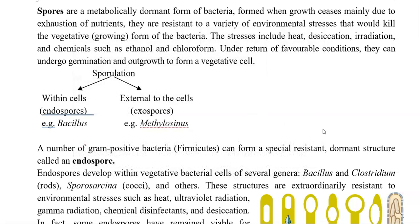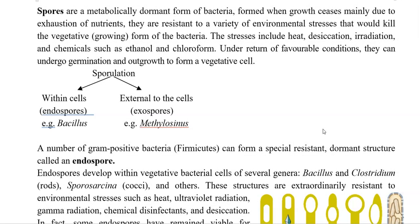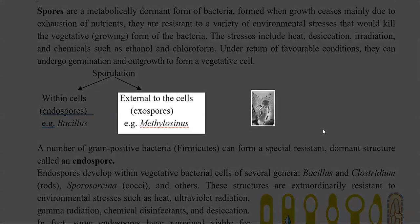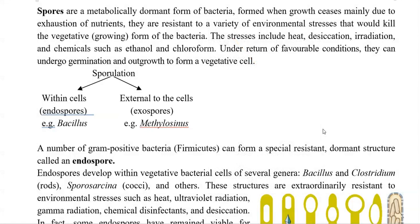Formation of a spore is referred to as sporulation. Sporulation can occur within the cells — that is endospore formation — a common attribute of gram-positive bacteria. Whereas sometimes the spores can be external to the cells, which is commonly referred to as exospores, which may not have as much heat resistance or radiation resistance as endospores, but they are still formed during unfavorable seasons.